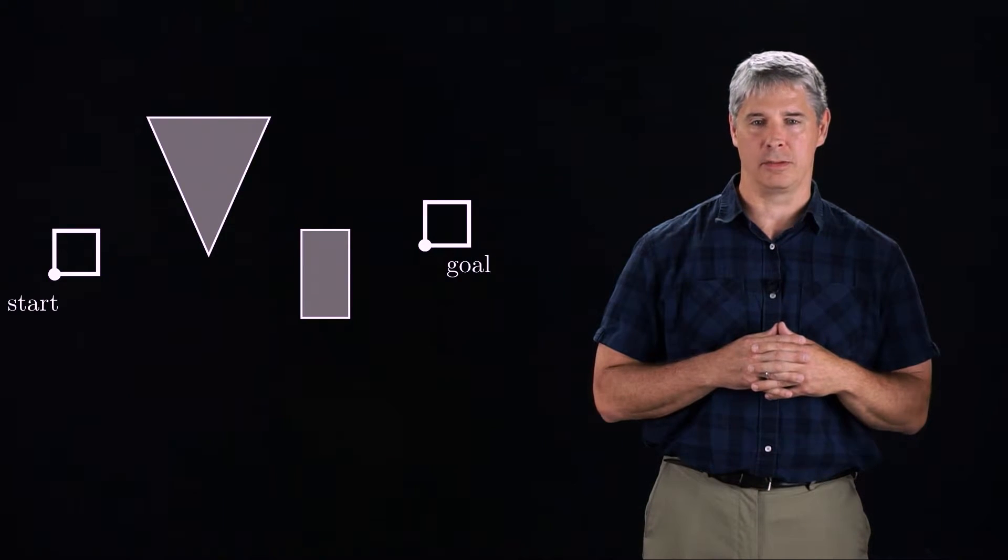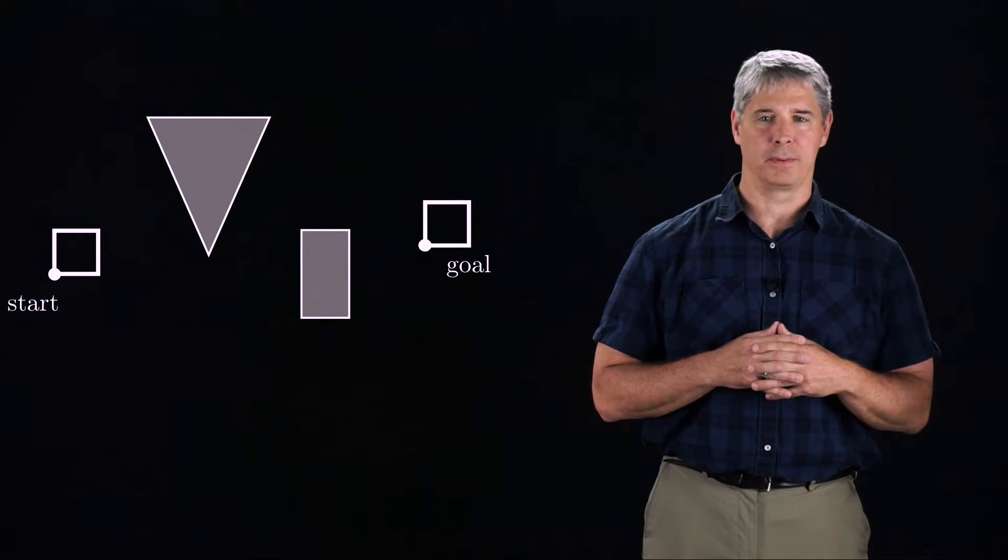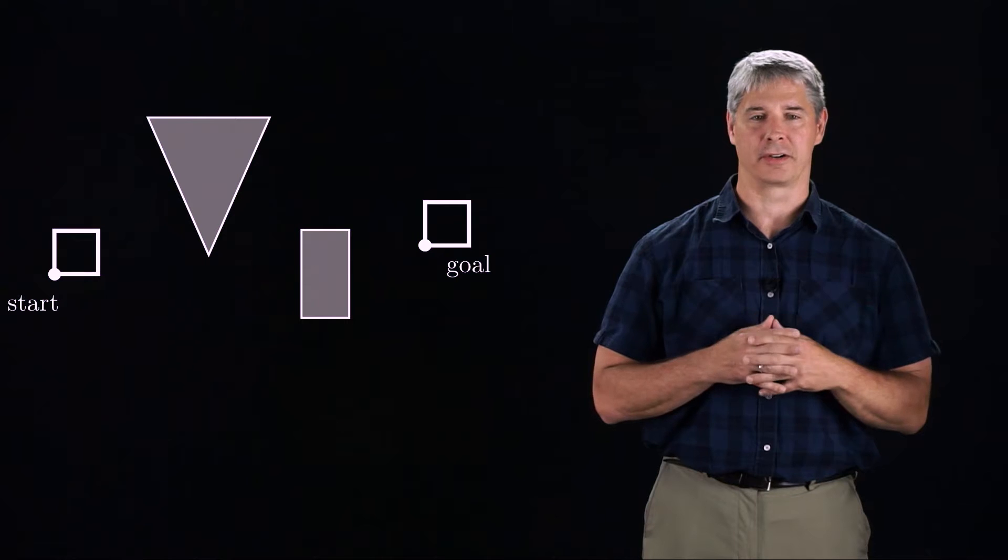For most C-spaces, constructing a true roadmap is complex and rarely done, but there are some examples for which it is simple. One such example is the case where a polygonal mobile robot, shown here as a square, translates in a plane among polygonal obstacles, indicated here in gray.